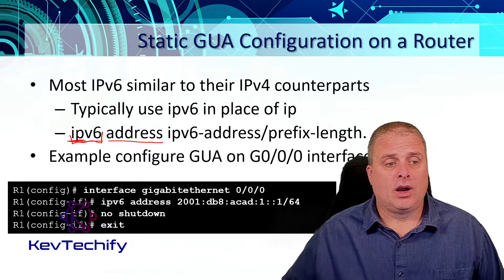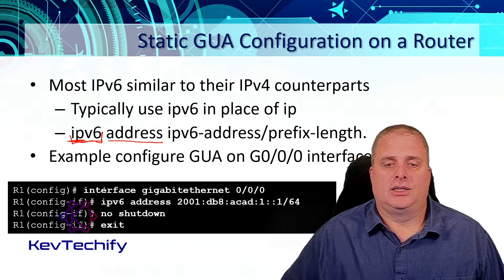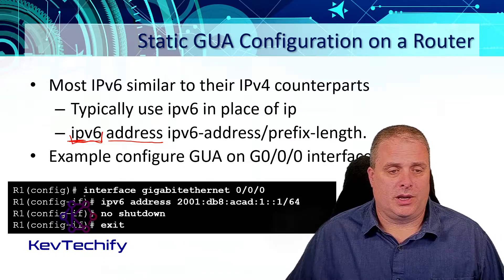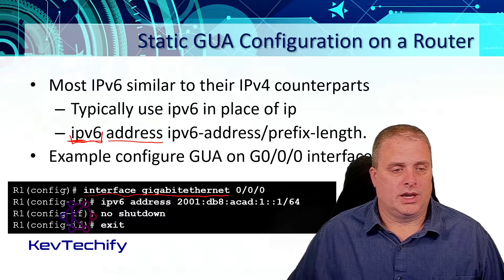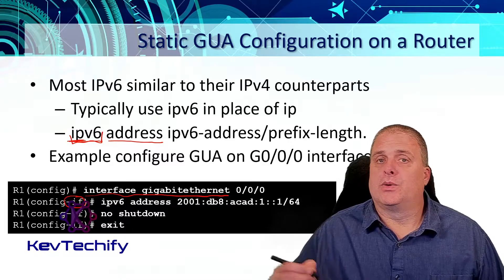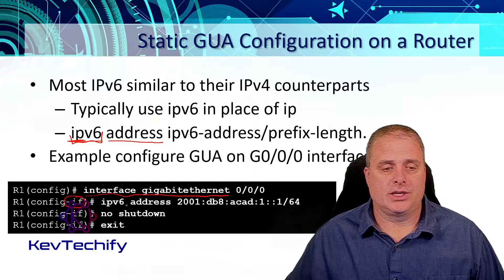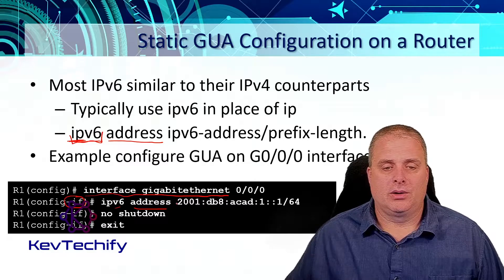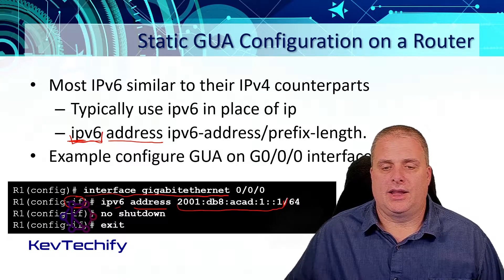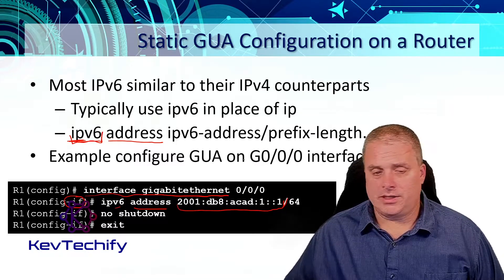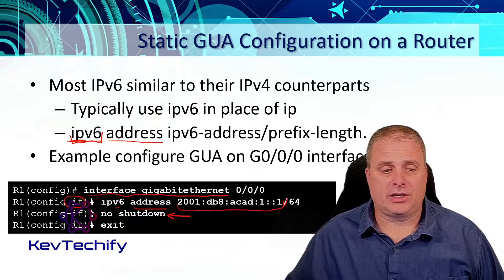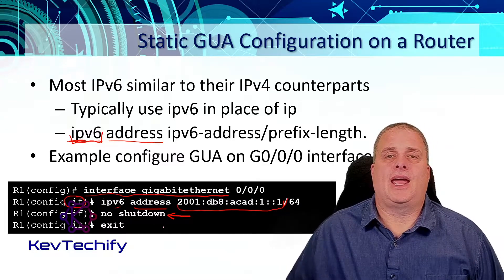Very similar to IPv4, here is an example of configuring that global unicast address on the G0/0/0 interface. We are in R1 in global configuration mode. We go into the interface by typing "interface gigabit ethernet 0/0/0". Notice our prompt changes from global configuration into configuring an interface. Then we enter "ipv6 address" followed by the address — the 2001 global unicast address — and then our slash prefix number. Anytime we do anything with an interface, we always do a "no shutdown" to turn it on, since physical interfaces are off by default. Then we exit. We have now manually set our global unicast address on our router interface.